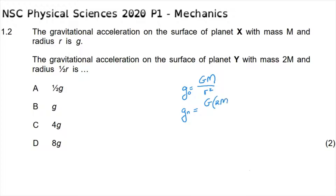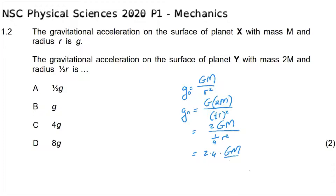The mass now becomes double the original mass, and the radius of that planet becomes one-half of the original radius squared. Both of those changes would result in the gravitational acceleration increasing. We can show this by taking the factor of two out to the front of the equation, and one-half r squared becomes one over four r squared.